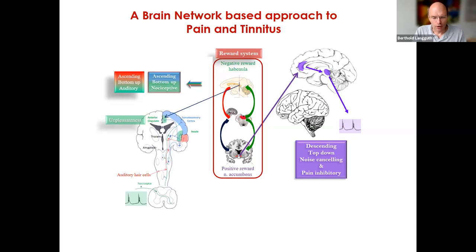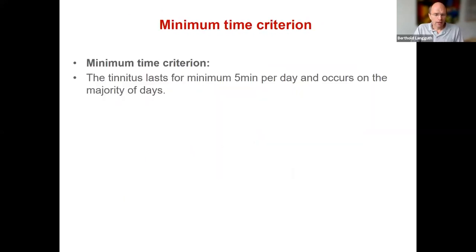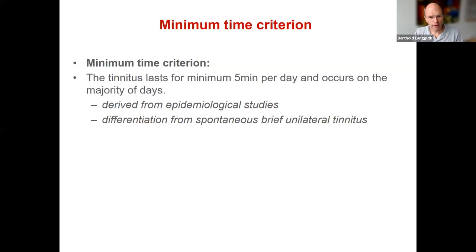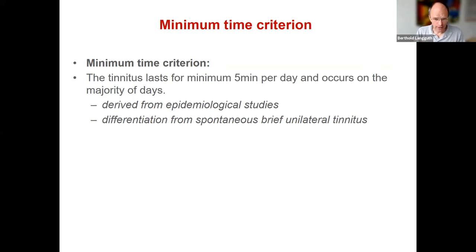It's really reasonable to orient our classification to the established classifications of pain. We also have some time criteria conventions to decide about. We adapted the time criterion used by most epidemiological studies, which means tinnitus lasts for a minimum of five minutes per day and occurs on the majority of days. This is arbitrary, but it's a convention we should adapt to. It should differentiate from so-called spontaneous brief unilateral tinnitus — where many people report a short sound on one side that comes and goes, not regularly, not on the majority of days — and that is not tinnitus.